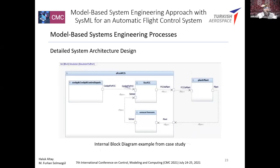During the system detailing process, the messages transmitted between blocks in the sequence diagram are examined, and the interfaces of the subsystems are created. The automatic flight control system has three subsystems: cockpit control, flight control, and sensors. The plant is a real helicopter. The interfaces are shown in the internal block diagram in SysML, and the interface has been defined for all blocks created in the system. The helicopter and automatic flight control system interface design is shown in the figure.